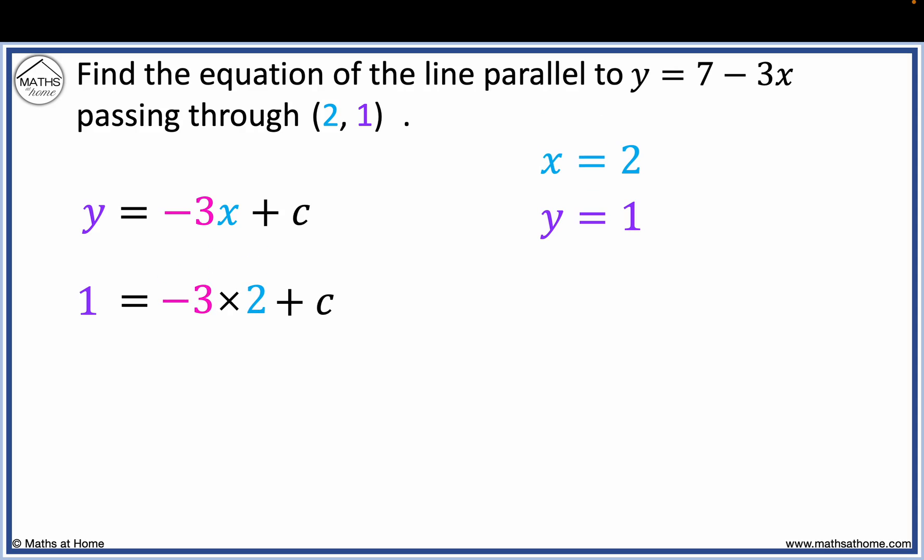Now minus 3 times 2 equals minus 6. Add 6 to both sides to obtain 7 equals c. Therefore, y equals minus 3x plus c becomes y equals minus 3x plus 7.